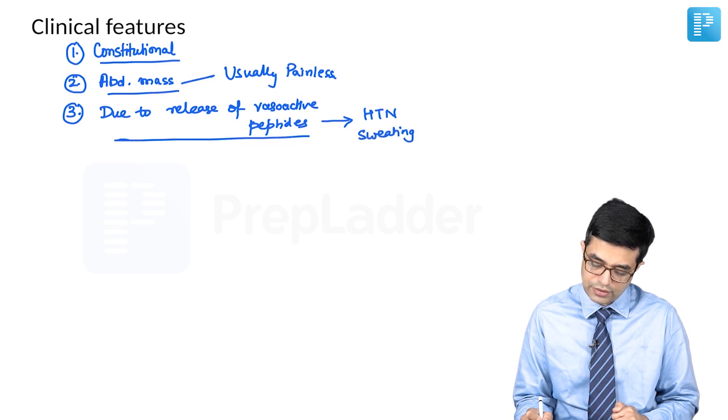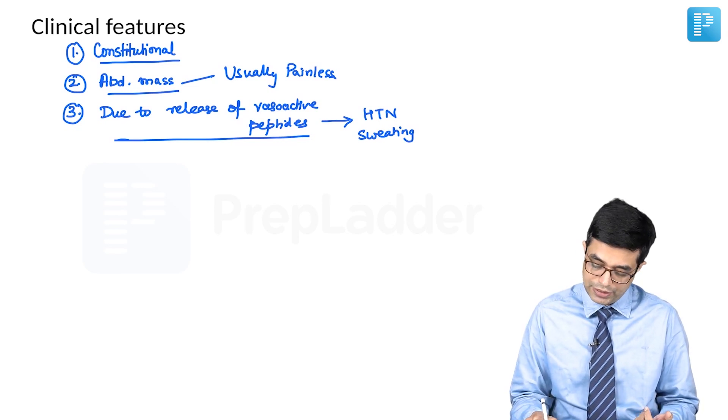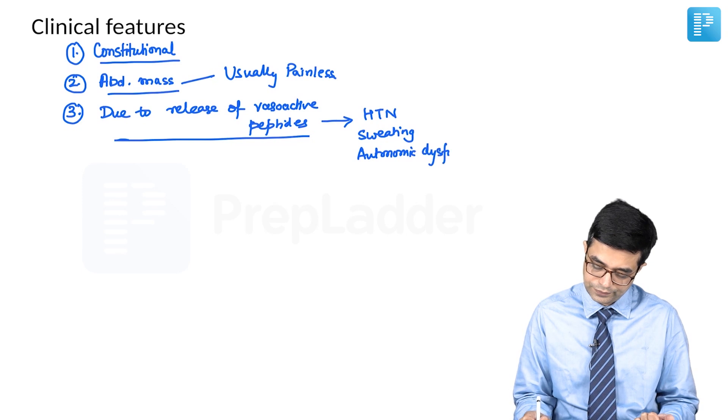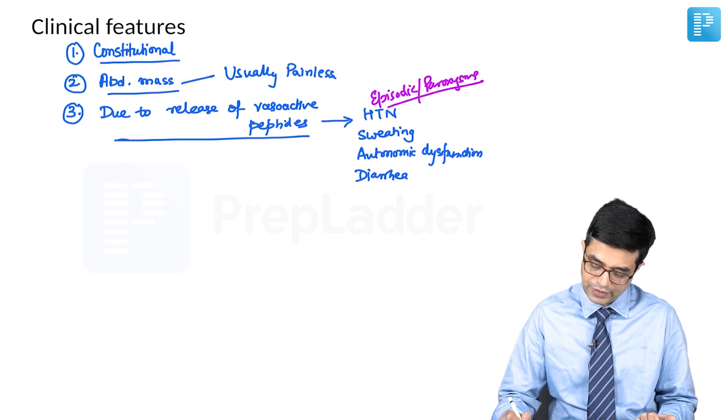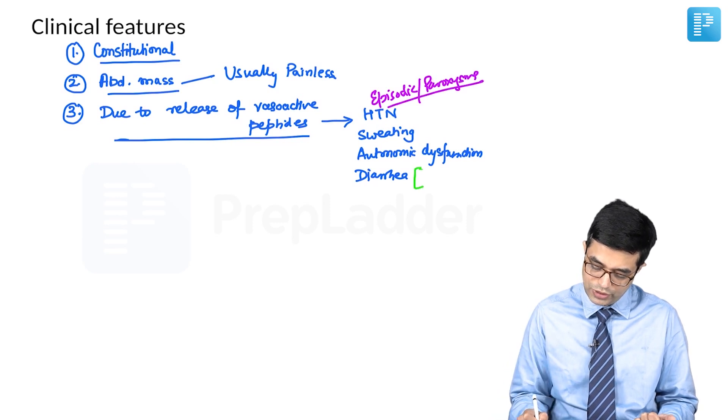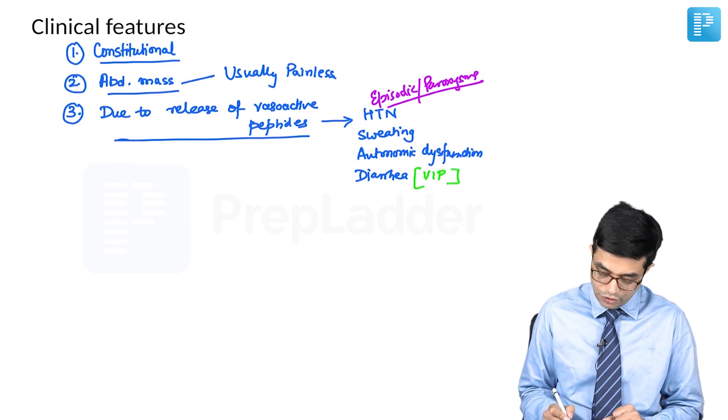Excessive sweating is known as diaphoresis. There may be features of autonomic dysfunction, and sometimes diarrhea may also be seen. All of these occur in an episodic form. Episodes or paroxysms of these manifestations tend to occur. Diarrhea usually is seen due to release of vasoactive intestinal peptide. Fourthly,